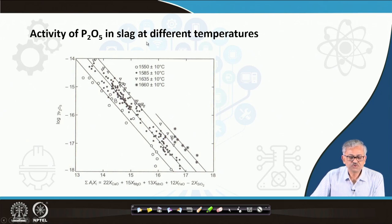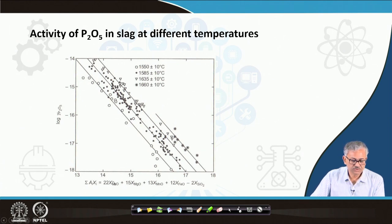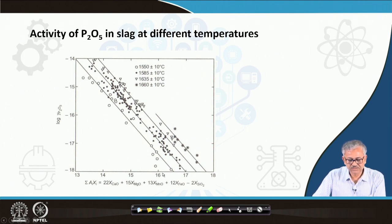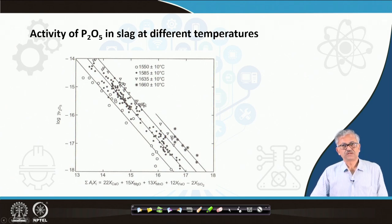The activity of P2O5 in slag varies at different temperatures. The slag basicity is defined as a summation of basic oxides with different weighting factors — CaO has a high weighting factor, then MnO, then FeO, and then the acidic oxide SiO2. With increasing slag basicity, the activity of P2O5 really decreases. People have done extensive activity calculations at basic slag conditions at different temperatures.